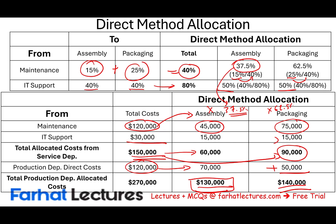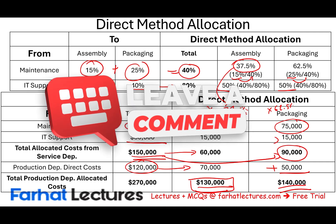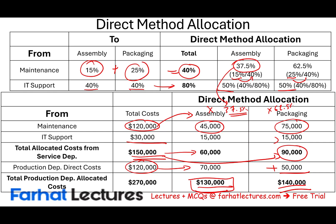In this example, we worked through the direct cost allocation method. Next, we will work the step method and the reciprocal method using this same example, so you can see how each approach works and build your understanding progressively. Visit Farhat Lectures for multiple choice questions and additional resources — whether you are a CPA candidate, CMA candidate, cost or managerial accounting student, or looking to improve your professional certifications. Invest in yourself; Farhat is always here to help.